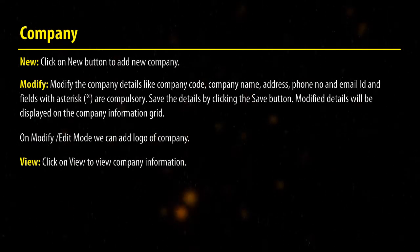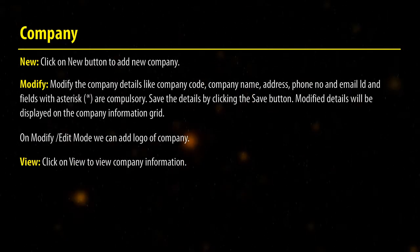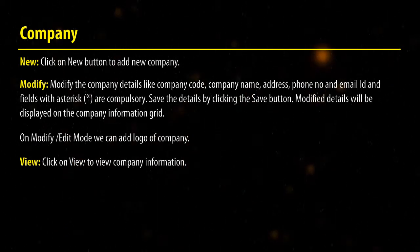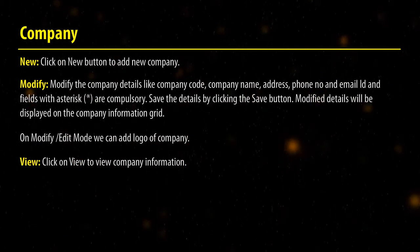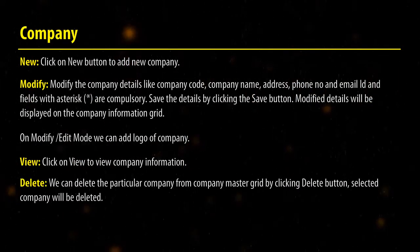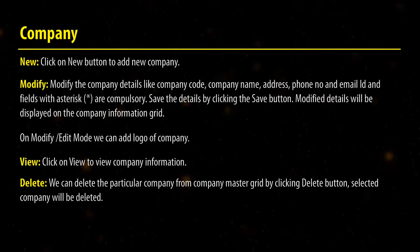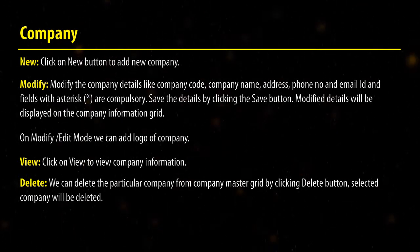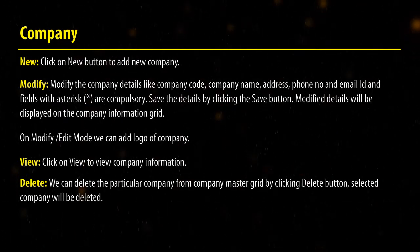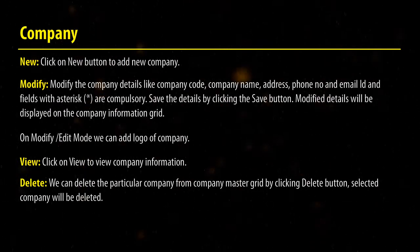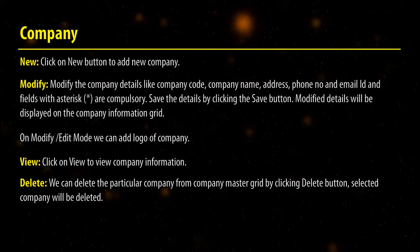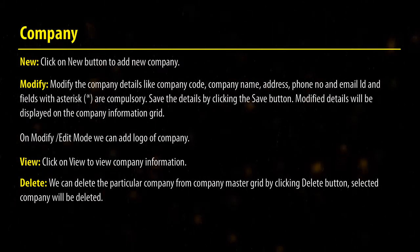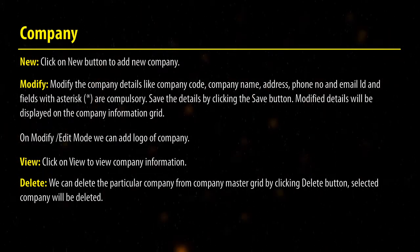Click on View to view company information. We can delete a particular company from the company master grid by clicking the Delete button. The selected company will be deleted.